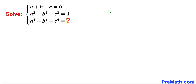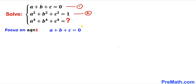Let's go ahead and get started. Let me label these equations — I'm going to call this equation number one and this equation number two. Now let's focus on equation one. I have copied down equation one, and I'm going to isolate c by moving a plus b to the other side.